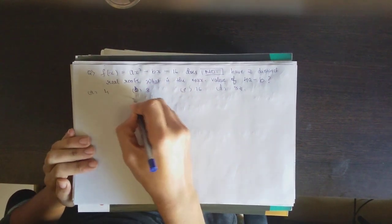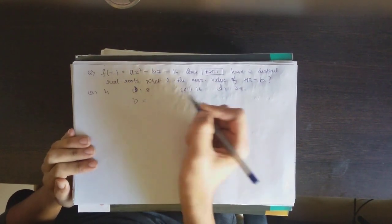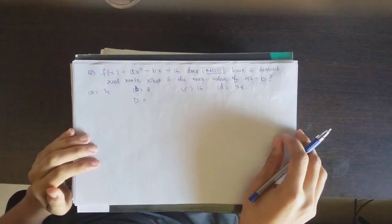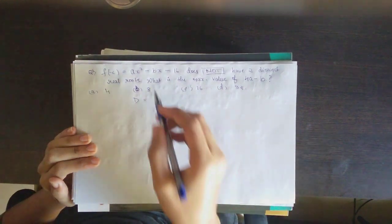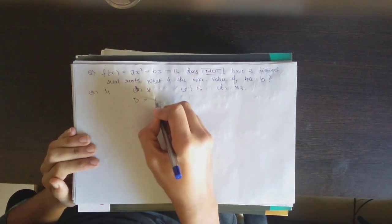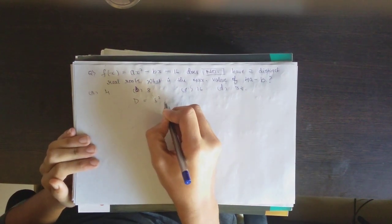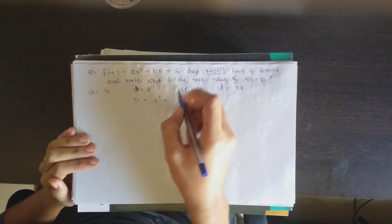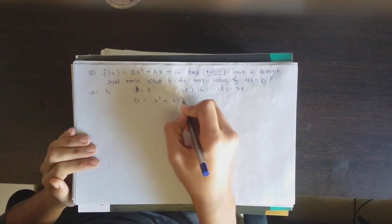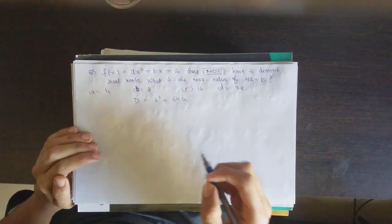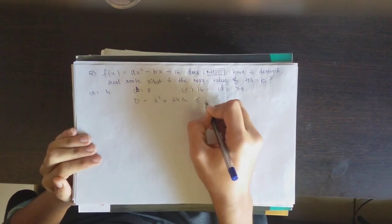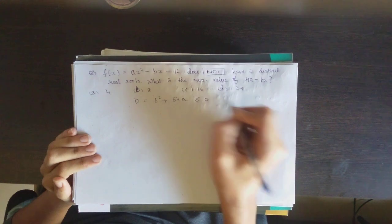So let's write it down. D — we know it is b squared minus 4ac for a general quadratic equation, and for this equation it is b squared plus 64a, and we got to know that it must be less than or equal to 0.